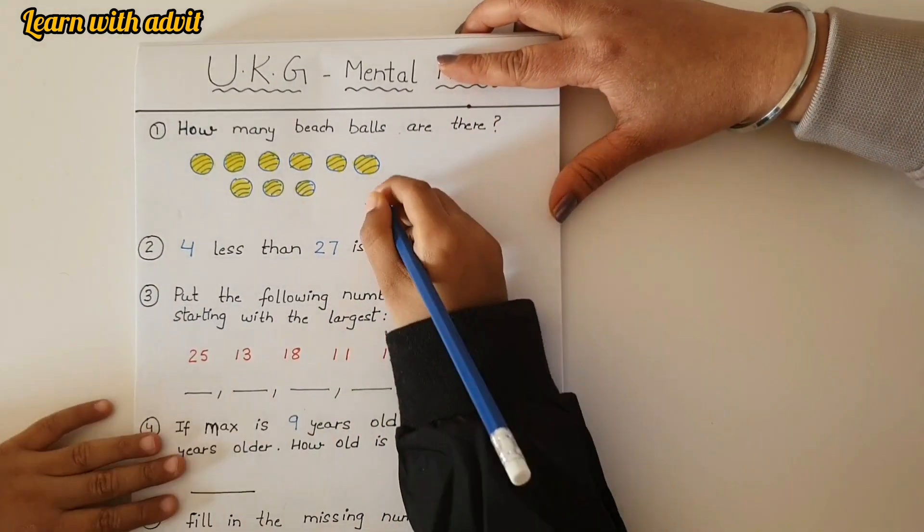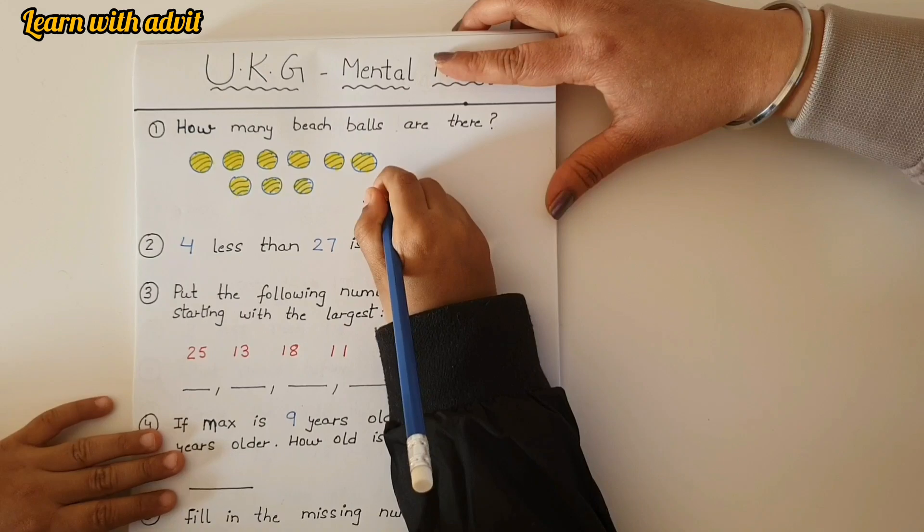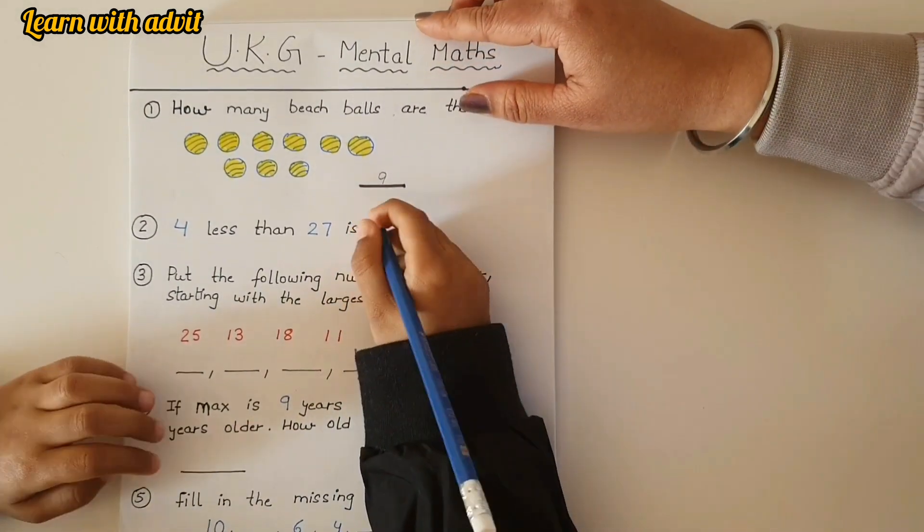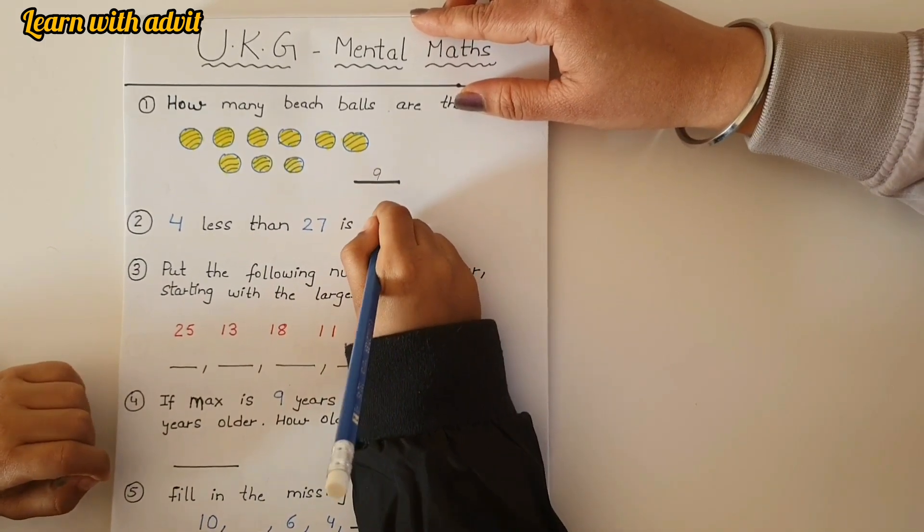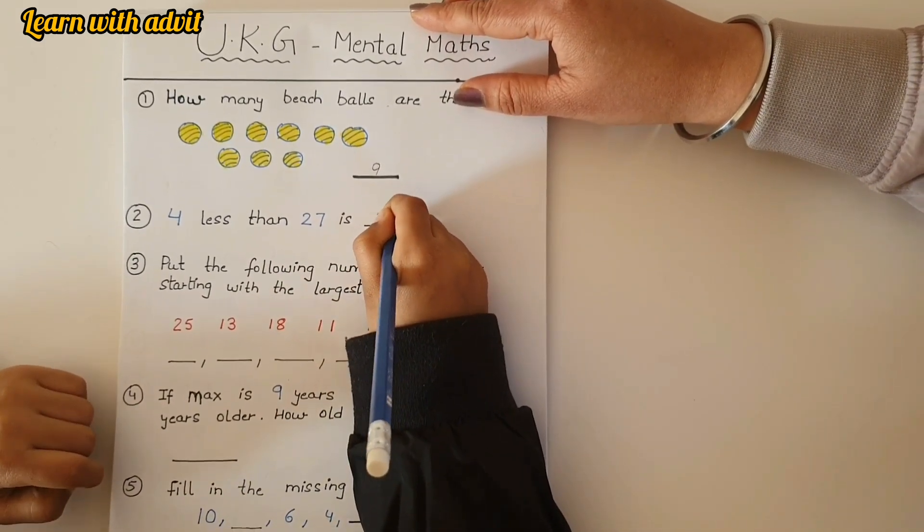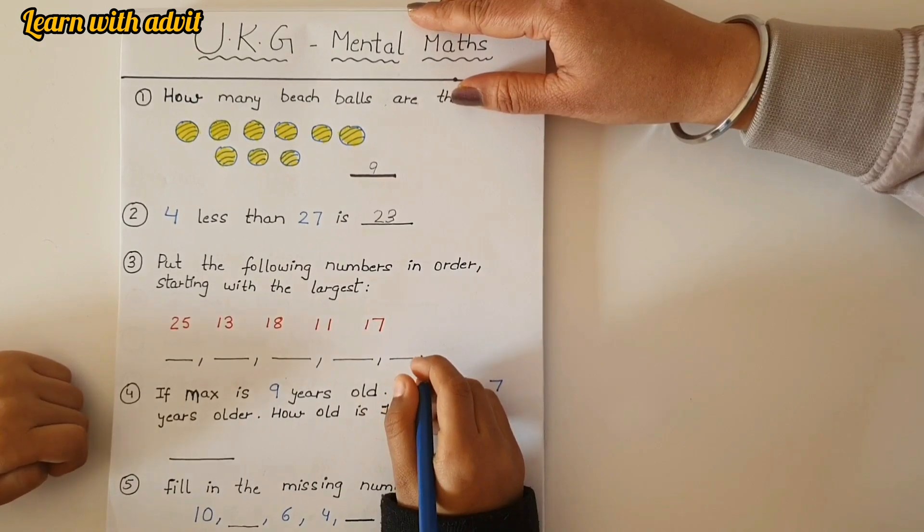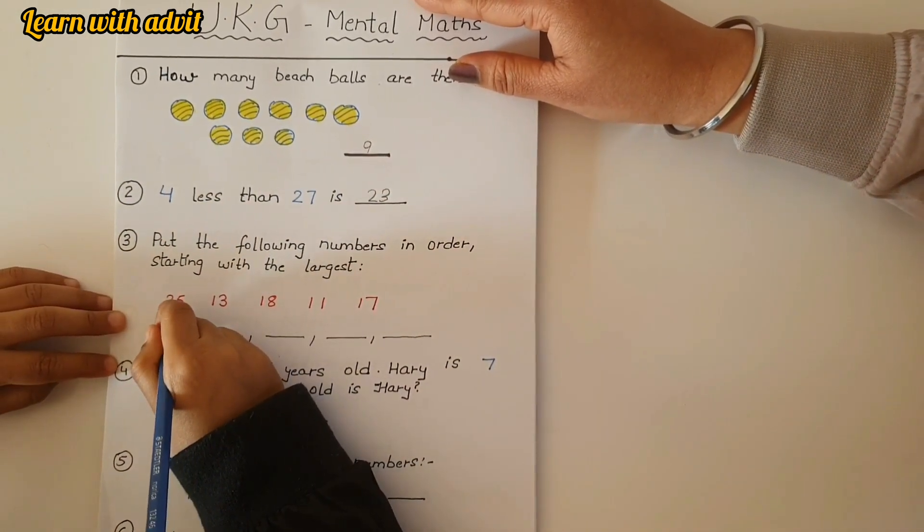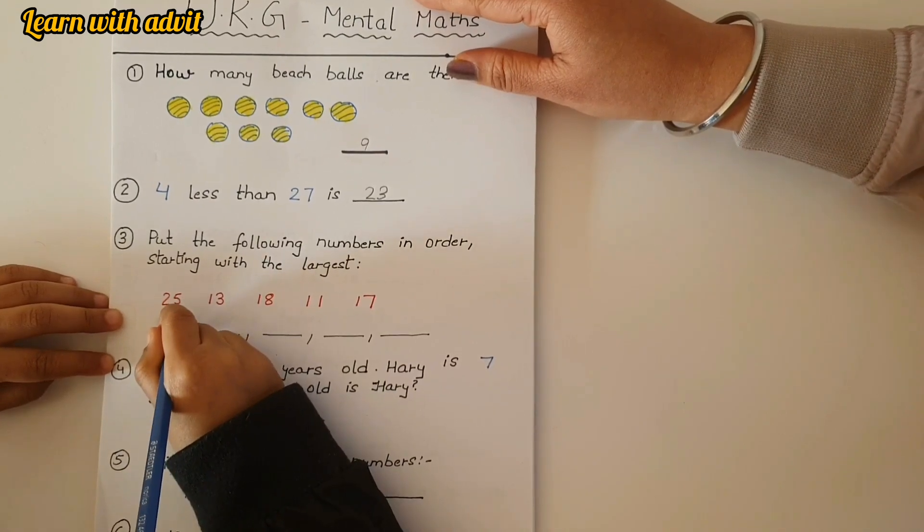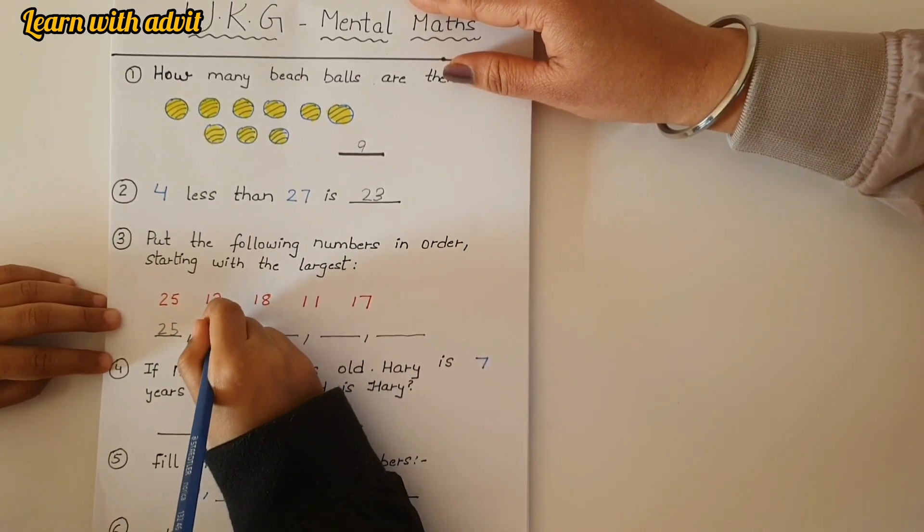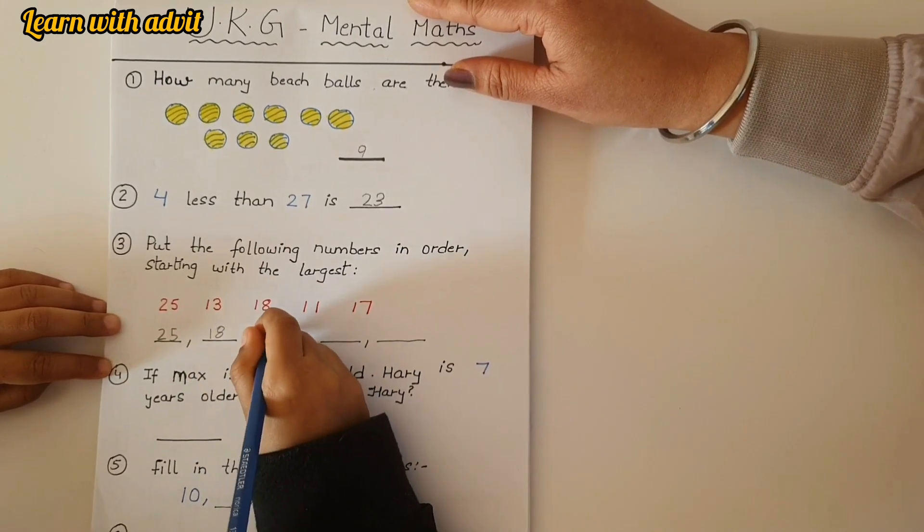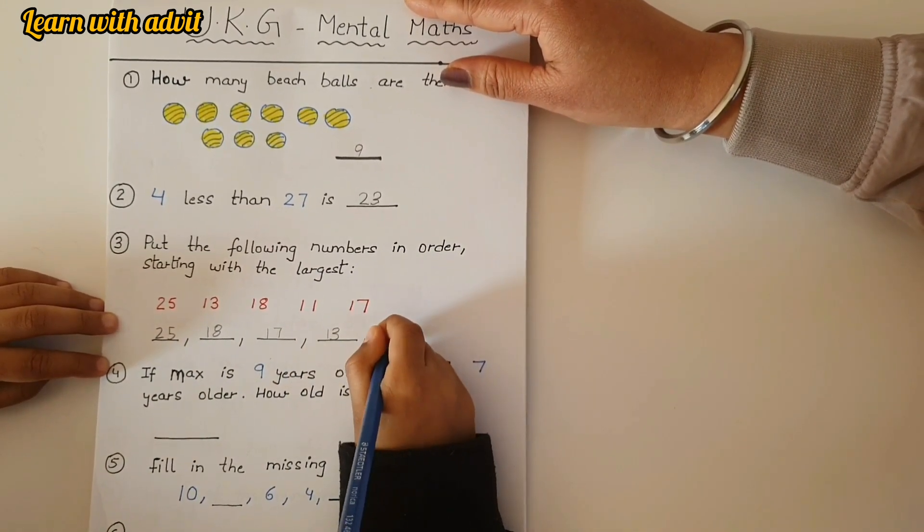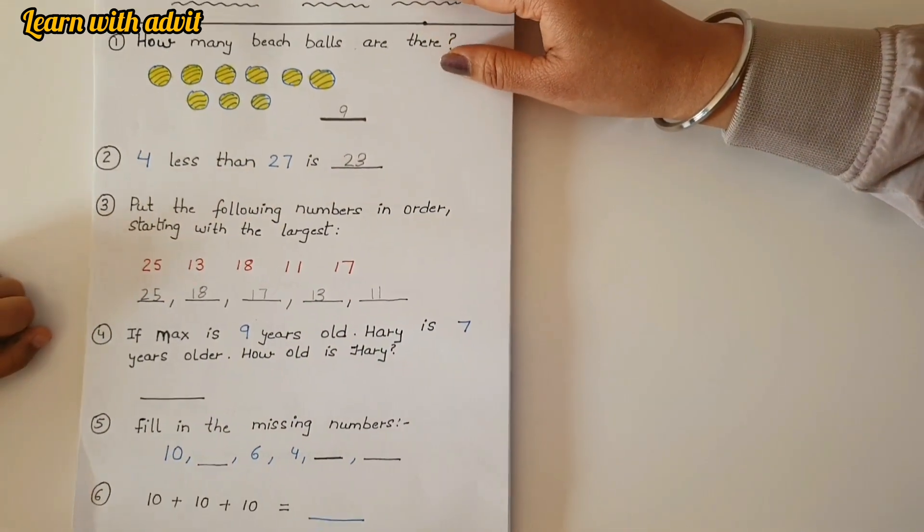Put the following numbers in order, starting with the largest. So you have to put the largest number. 25, 17 very good, 13 yes, 11 very good. Now the next.